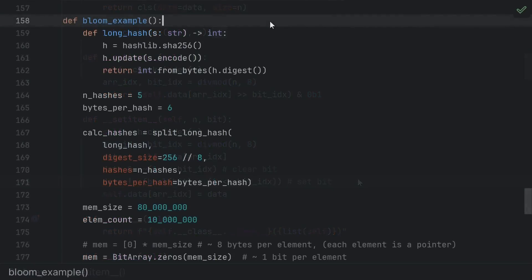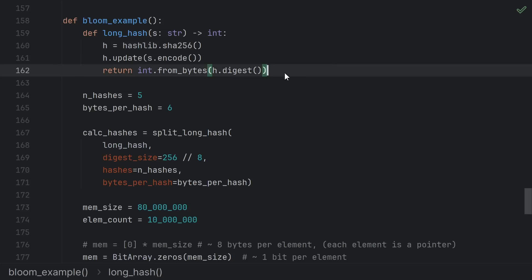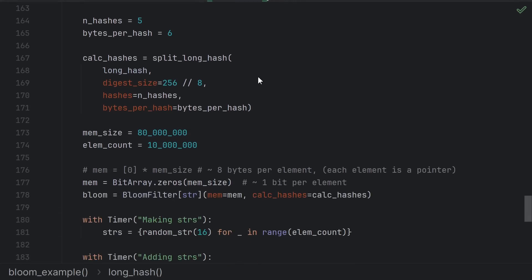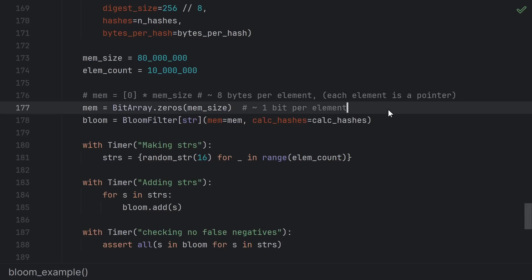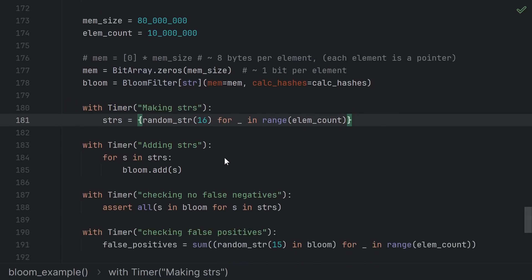Putting it all together, we can use it like this. We define a hash function. In this case, we just use SHA256 and convert the result to an int. We split our long hash into 5 hashes that use 6 bytes or 48 bits each. Then we create our storage as a bit array initialized to zeros and create the bloom filter. I made a little timer utility here that just times each operation. Not important.